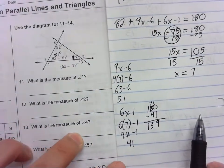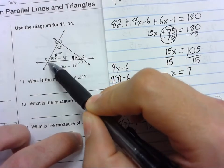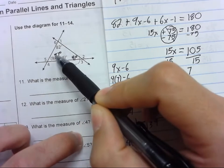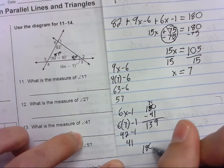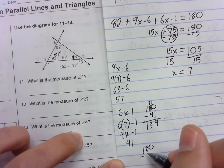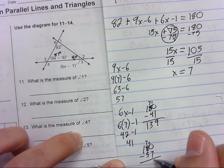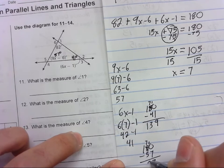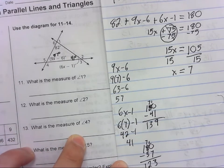Measure of angle 4. So we know again that this is a straight line, so 57 plus something will give us 180. So 180 minus 57. Borrow here, 10 minus 7 is 3, 7 minus 5 is 2, bring down the 1. So angle 4 is 123 degrees.